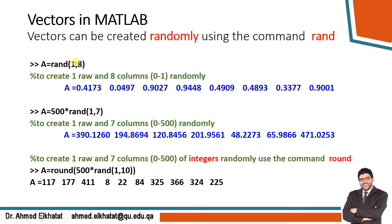Using rand, the vector values are randomly between zero and one — different numbers each time. If you want values from zero to five, simply multiply the function by 5. To get values from zero to 500, multiply by 500. If you want integers, use round before the expression — for example, round(500 * rand(1, 10)).